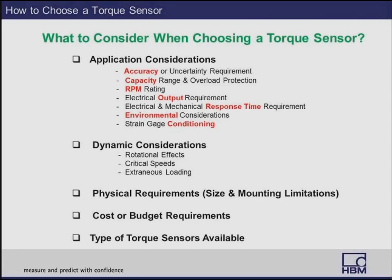Today we'll go over what to consider when choosing a proper torque sensor: application considerations such as accuracy, capacity range, RPM rating, electrical outputs, response times, environmental considerations, and proper strain gauge conditioning; dynamic considerations such as rotational effects, critical speeds, and extraneous loading; physical requirements such as size and mounting limitations; cost or budget requirements; and the types of torque sensors available in the marketplace.